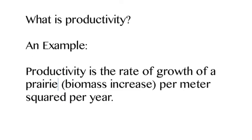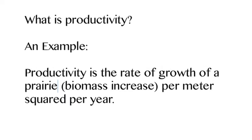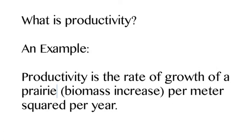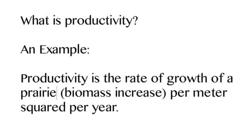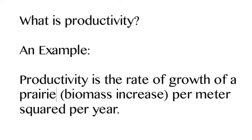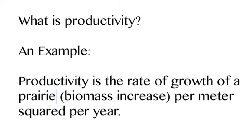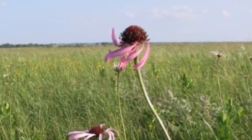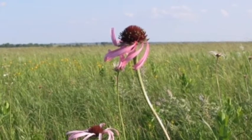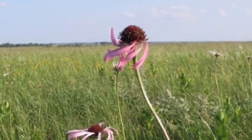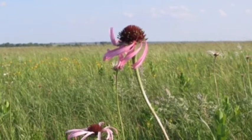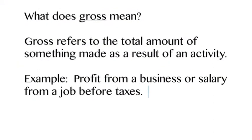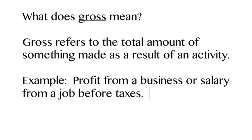So what is productivity? An example in an ecosystem would be if you took a prairie and you measured out one square meter — a meter by a meter — and you measured the growth for a whole year. That would be how productive that ecosystem was in that meter.